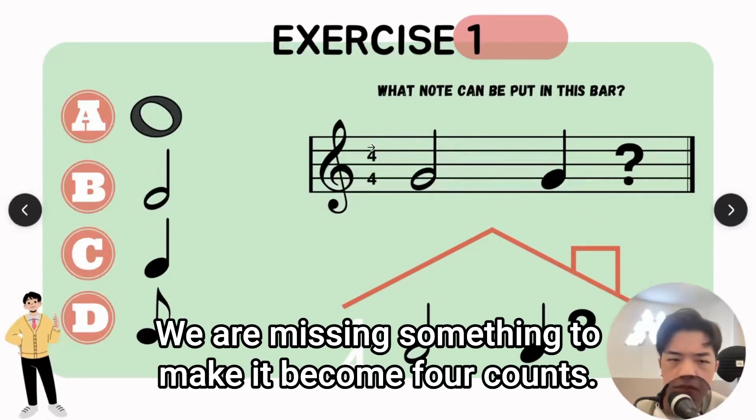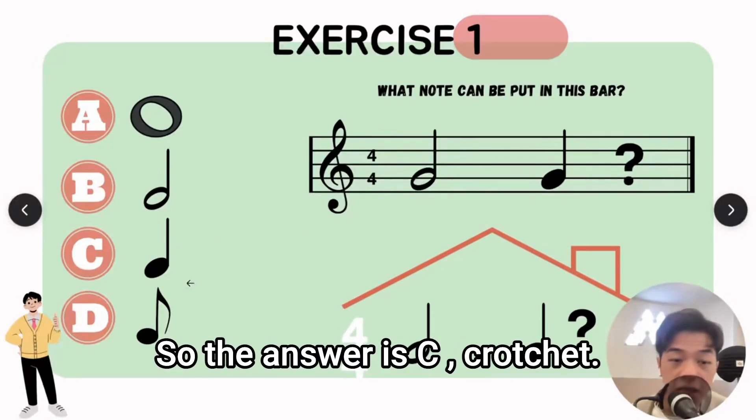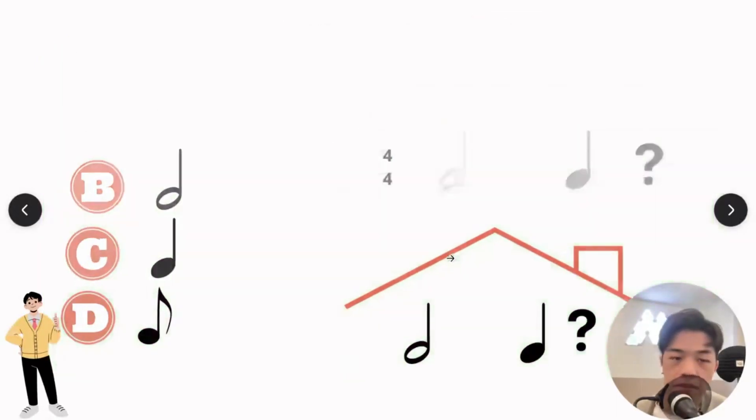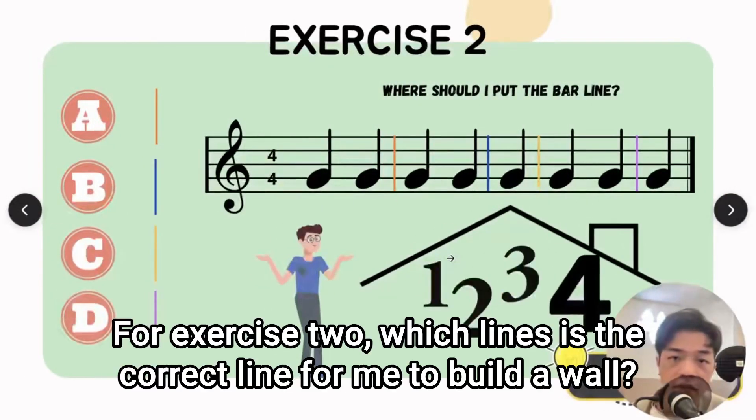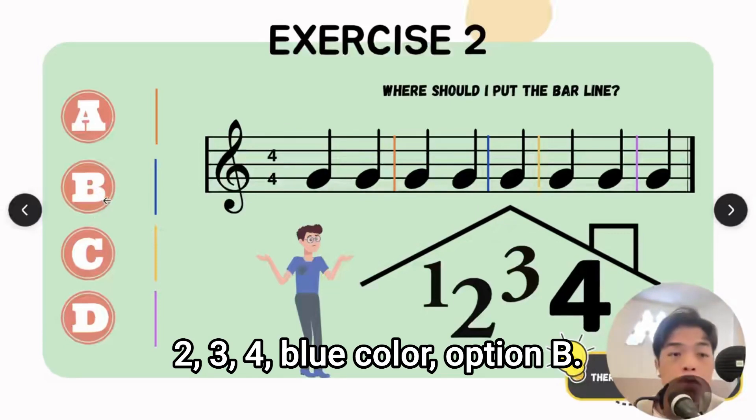For exercise two, which line is the correct line for me to build a wall to cut into four counts in a bar? The answer is one, two, three, four. Blue color, option B.